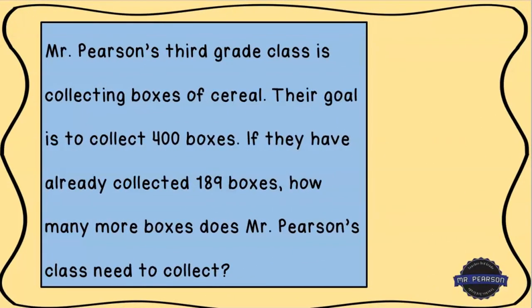All right, hopefully you've had an opportunity to solve that problem. Let's go ahead and walk through this. We're going to follow the steps that we do. The first thing we want to do is circle the important numbers. As I read through here, I see that they have a goal to collect 400 boxes of cereal, so let's go ahead and draw a circle around 400 boxes.